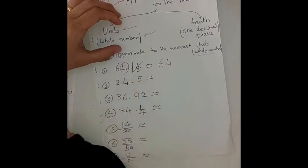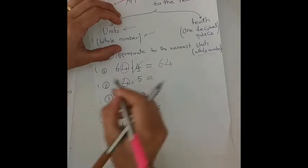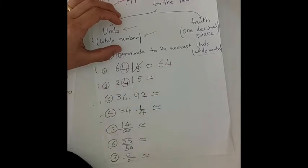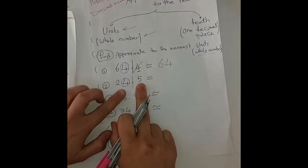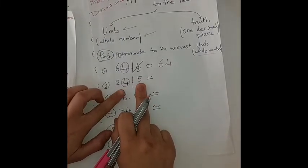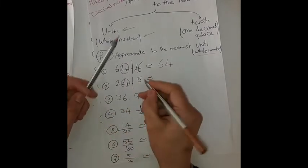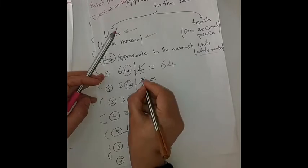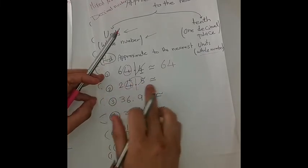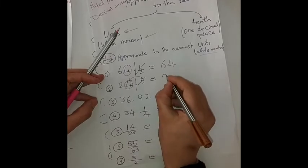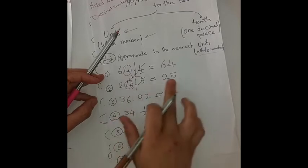Let's see another example: 24.5. We circle the units place, which is 4, and build a whole. We look at its neighbor, which is the tenth place — five. Five is a rich digit, so we cancel it and add one to the units place. So 24.5 is approximately equal to 25.